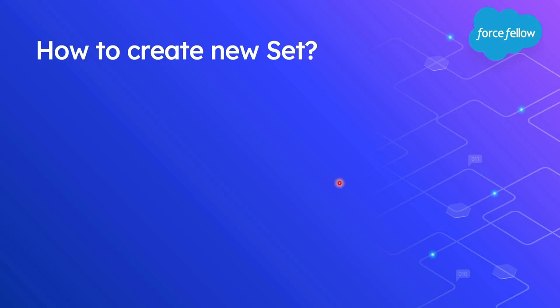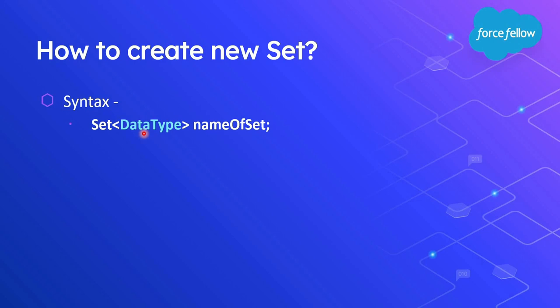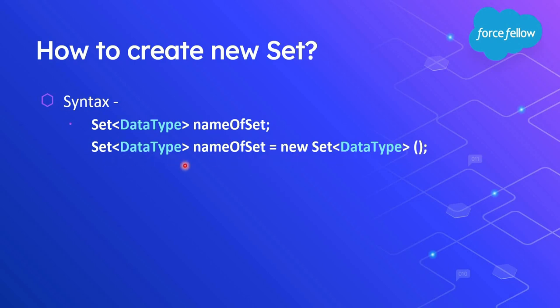Now let's see how to create a new set in Apex. The syntax requires first writing 'Set', then in angle brackets providing the data type — like what kind of data we want to store. We can use any data type Apex supports: Integer, String, Boolean, List, sObject, or any other. After that we provide a set name as the identifier. Without initialization, the value will be null, since the default value in Apex is null for any data type. To use non-primitive data types we need to initialize them using the 'new' keyword.